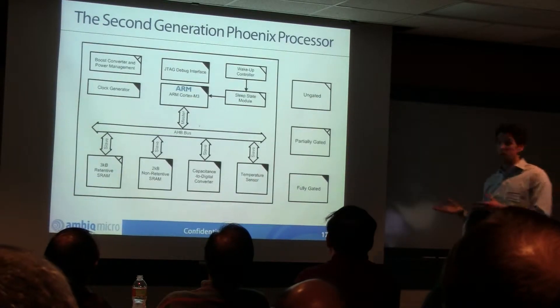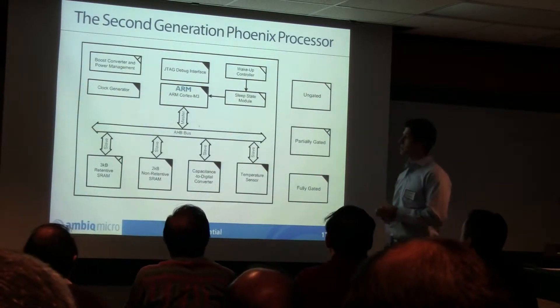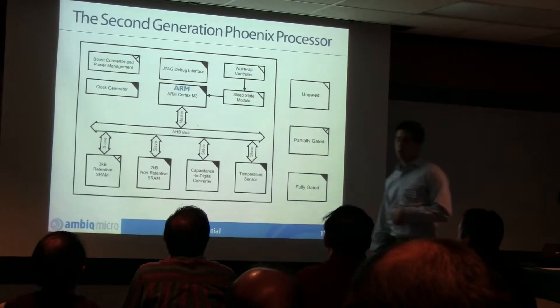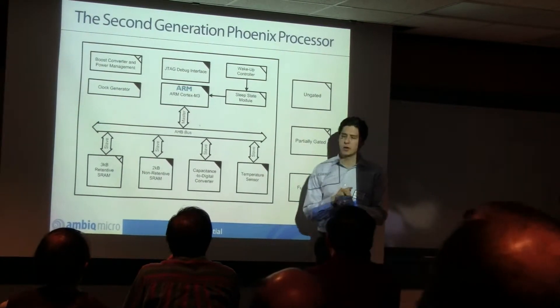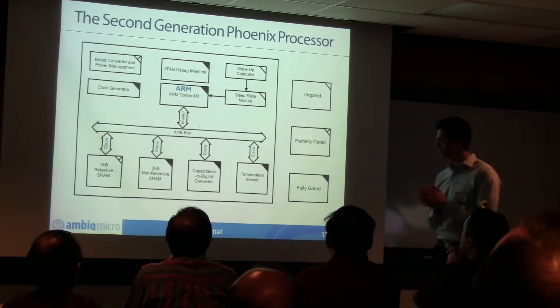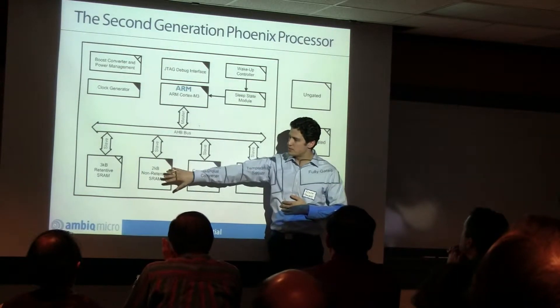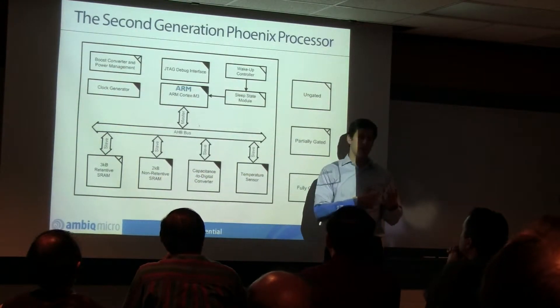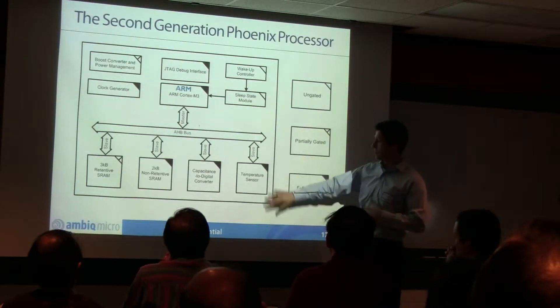That led to the second generation of the processor, where we said this whole 8-bit processor is just kind of silly, it's not real. What we did was we had at that time struck up our relationship with ARM, and ARM gave us access to their Cortex processors. The Cortex-M0 hadn't quite come out yet, so the Cortex-M3 at the time was the lightest weight microprocessor. We incorporated that, had a range of peripherals very much like before. You can see 3 kilobytes of memory, so it's actually larger than we had previously, 2 kilobytes of non-retentive memory. That means memory that's power-gated in sleep mode. And then some peripherals, a capacitive converter, a digital converter, and a temperature sensor.